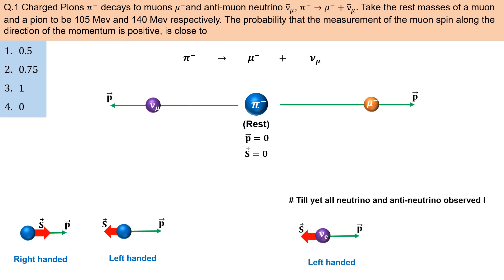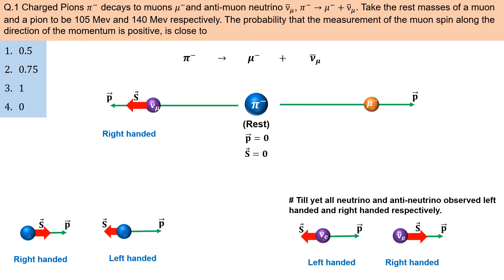All neutrinos are left-handed and anti-neutrinos are right-handed. So the anti-muon neutrino is right-handed. Anti-neutrino left side ki taraf move kar raha hai to uske spin ki direction bhi left side ki hogi takee yah right-handed bana rahe. Chuki pion ka spin zero hai isliye spin conserve banaye rakhne ke liye muon ka spin bhi uske motion ki direction, yani anti-neutrino ke opposite direction mein hona zaroori hai. That means muon ka spin aur momentum dono ek hi direction mein honge. To agar is decay reaction mein muon ke spin ko measure kiya jaye to muon ka spin hamesha hi uske momentum ki direction mein milega — that means 100% probability hai ki muon ka spin uske momentum ki direction mein hi measured ho.